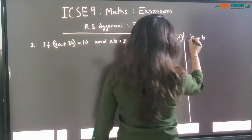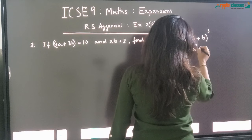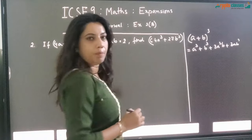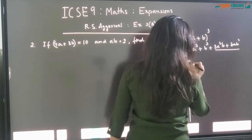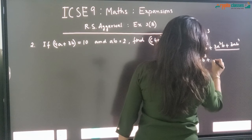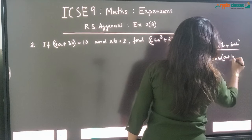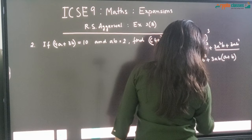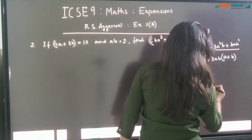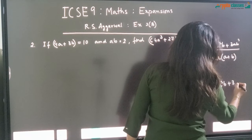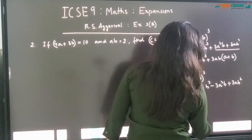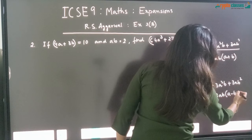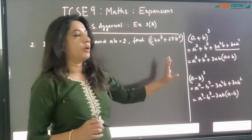A plus B whole cube has got two forms. One is A cube plus B cube plus 3A squared B plus 3AB squared. If we take 3AB common from the last two terms, we get A cube plus B cube plus 3AB whole into A plus B. This is the second form. Similarly, A minus B whole cube equals A cube minus B cube minus 3A squared B plus 3AB squared, and in the second form: A cube minus B cube minus 3AB whole into A minus B.